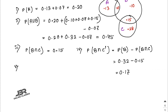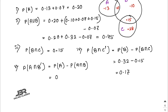Number five: P(A ∩ B complement) = P(A) − P(A ∩ B) = 0.20 − 0.07 = 0.13.